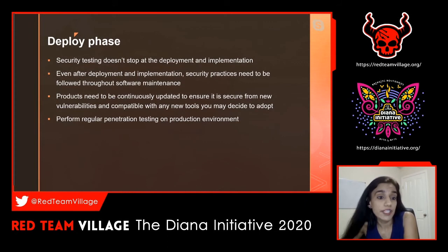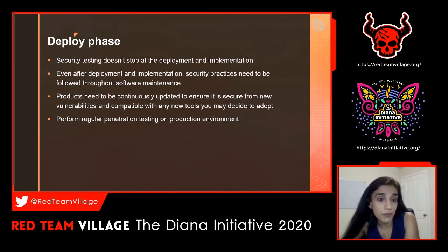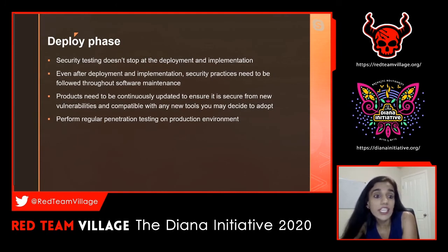Last is the deployment phase. In this phase, your code is already in production and you have completed all the checklists. But security does not stop because you have reached deployment and implementation. Security practices still need to be followed. We need to continuously test our application for any new vulnerabilities. There are tons of zero-day vulnerabilities, so we need to make sure we are continuously testing. It's a good practice to perform regular penetration tests on the production environment.